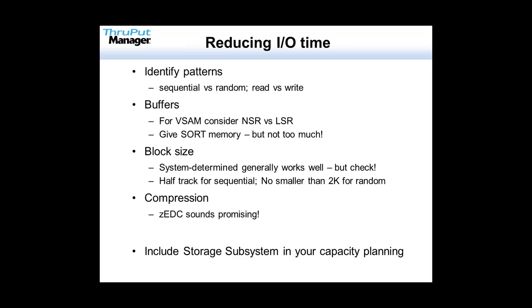To reduce IO time, you want to first break it down into the patterns. You can get this from tools such as Strobe, SMF 42 data, and for VSAM, SMF 64 records — these will tell you the patterns of IO: sequential versus random, read versus write. Buffering seems obvious, but sometimes we set buffers long ago and the data access patterns have changed. If it's a VSAM file, you want to know whether to use NSR or LSR buffers, largely determined by whether data is accessed sequentially or randomly. Sort is a big one — sort likes memory, but balance your memory use carefully.